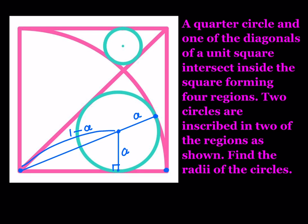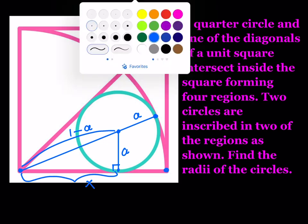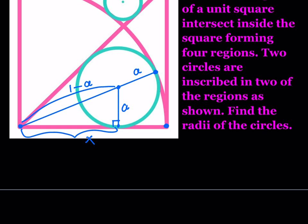Now we have a setup for an equation here, using the Pythagorean theorem. It means that we can find this length in terms of A. Let's call that X. So I'm going to write the Pythagorean theorem: X squared plus A squared equals the quantity one minus A, squared.